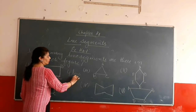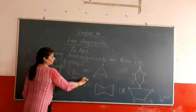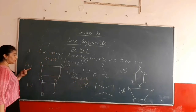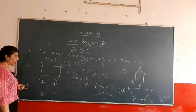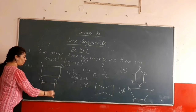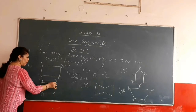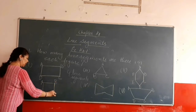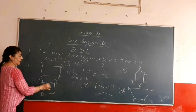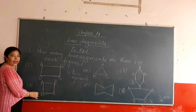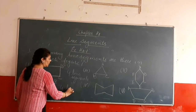Similarly, in the second part, there are also four line segments because: one is AB, next is BC, then CD, and DA. So there are four line segments.